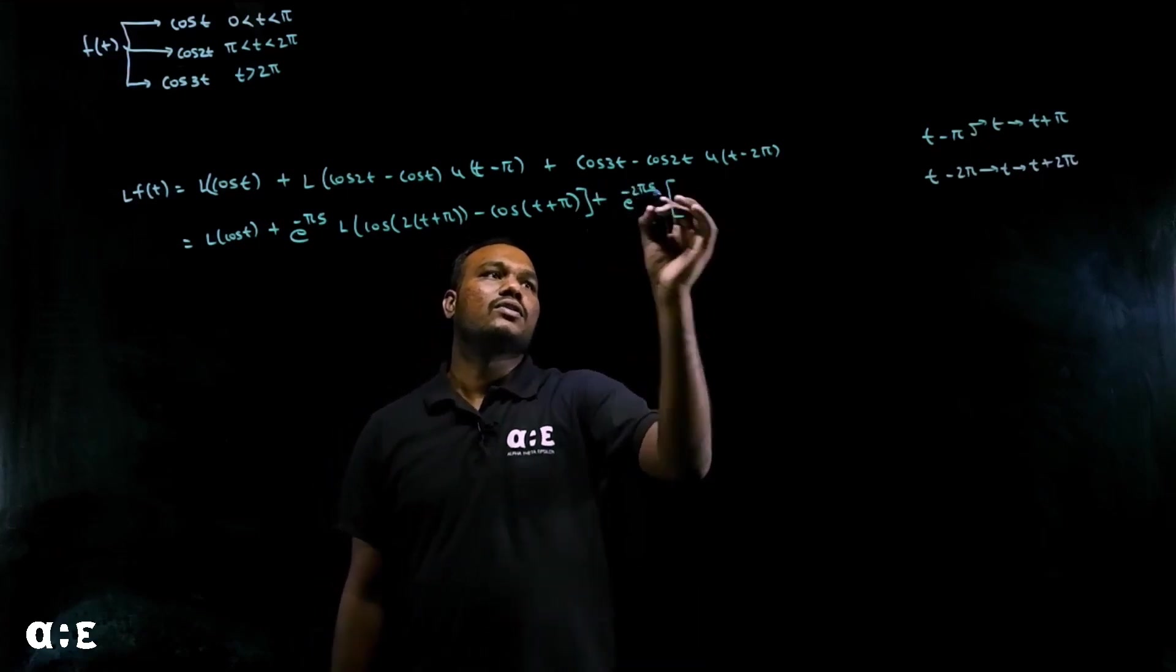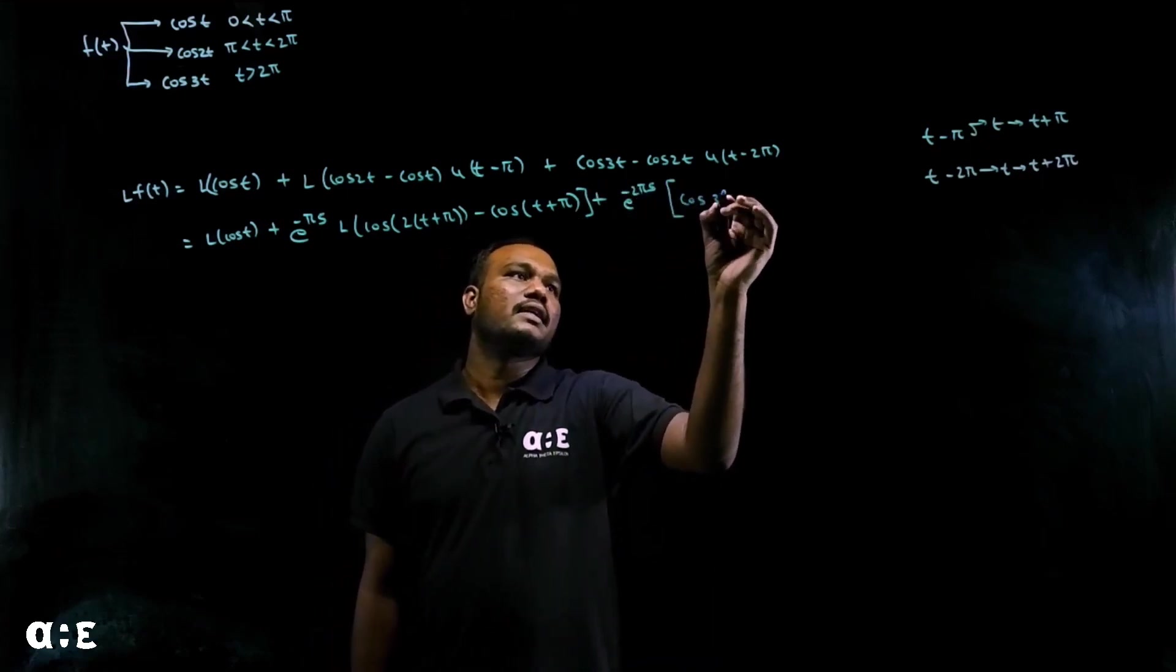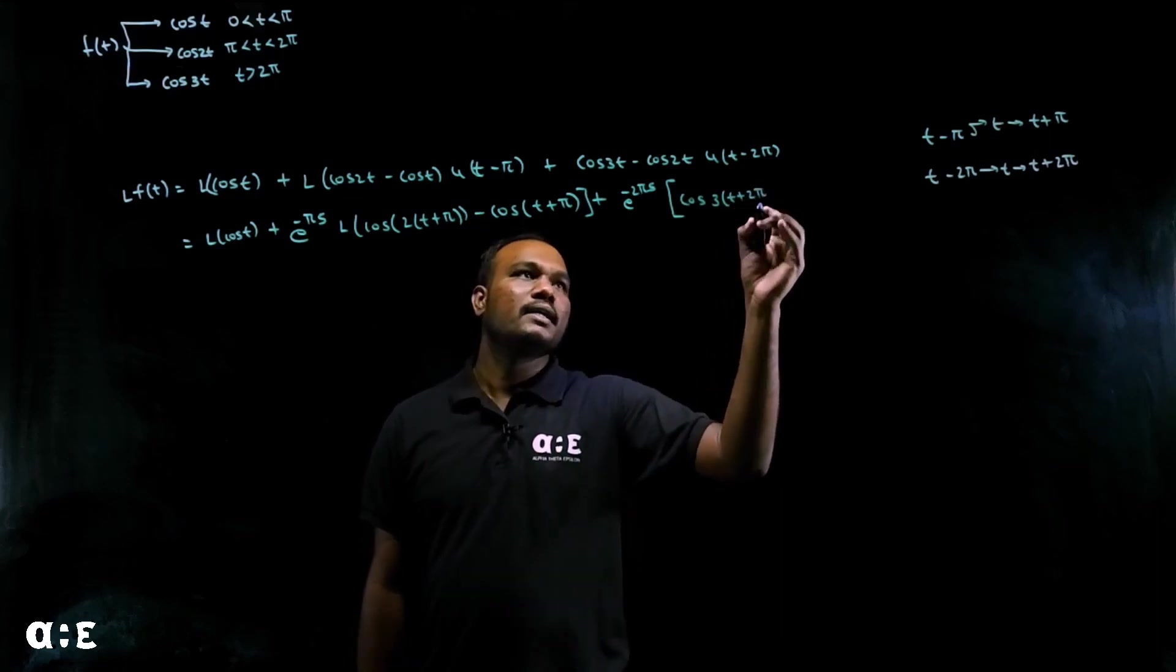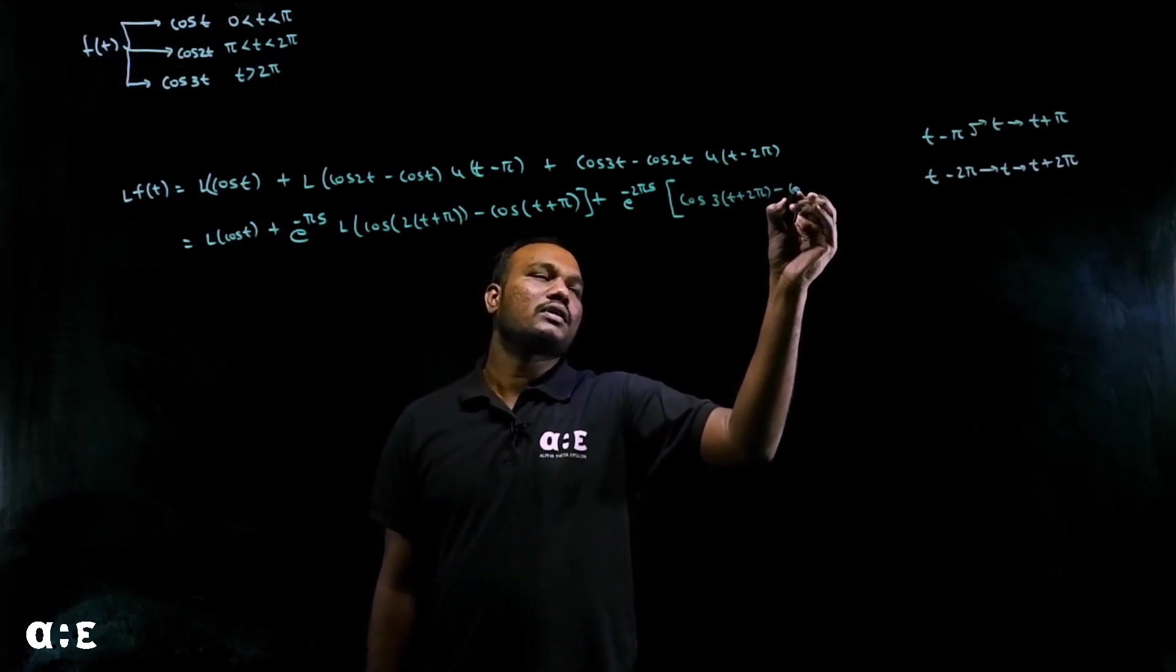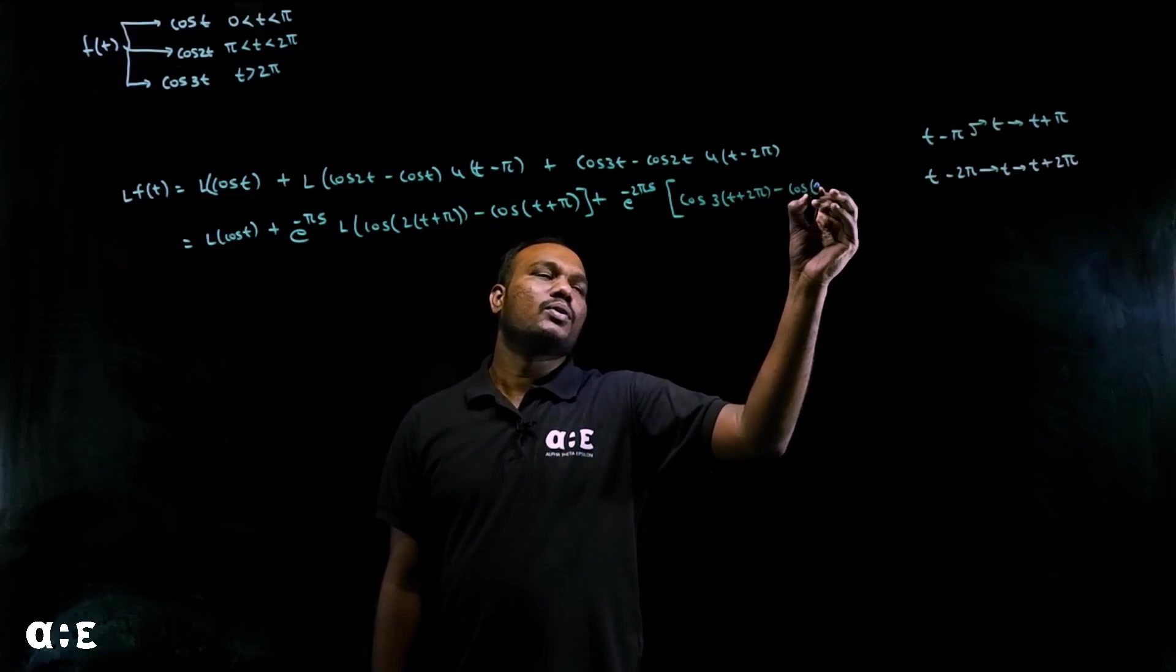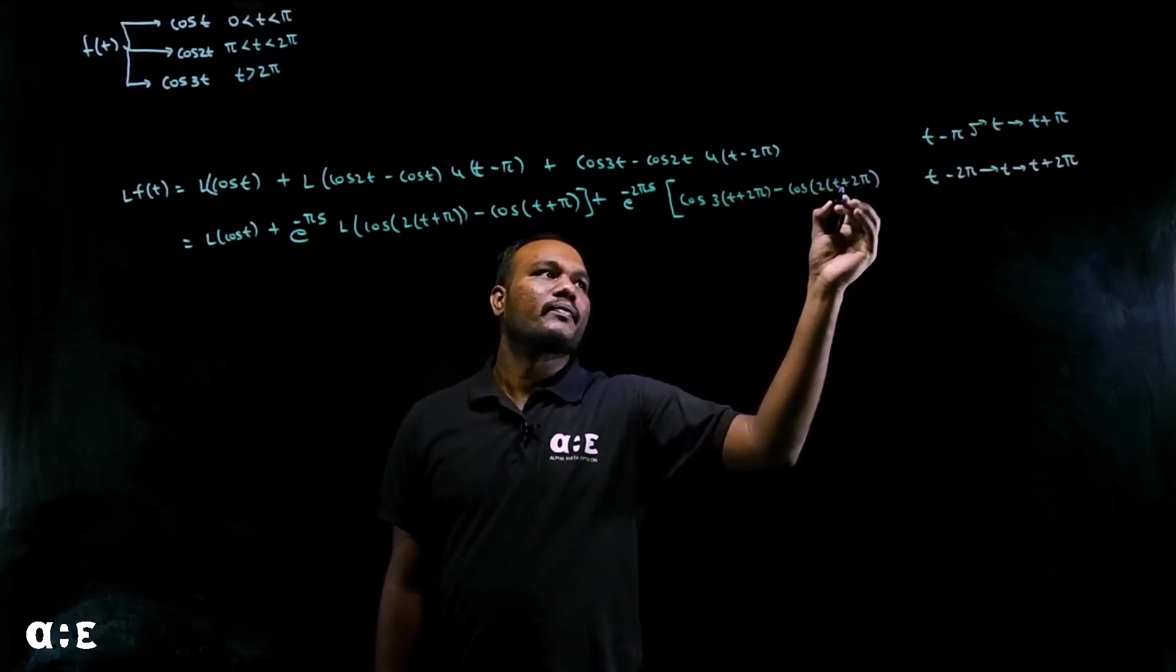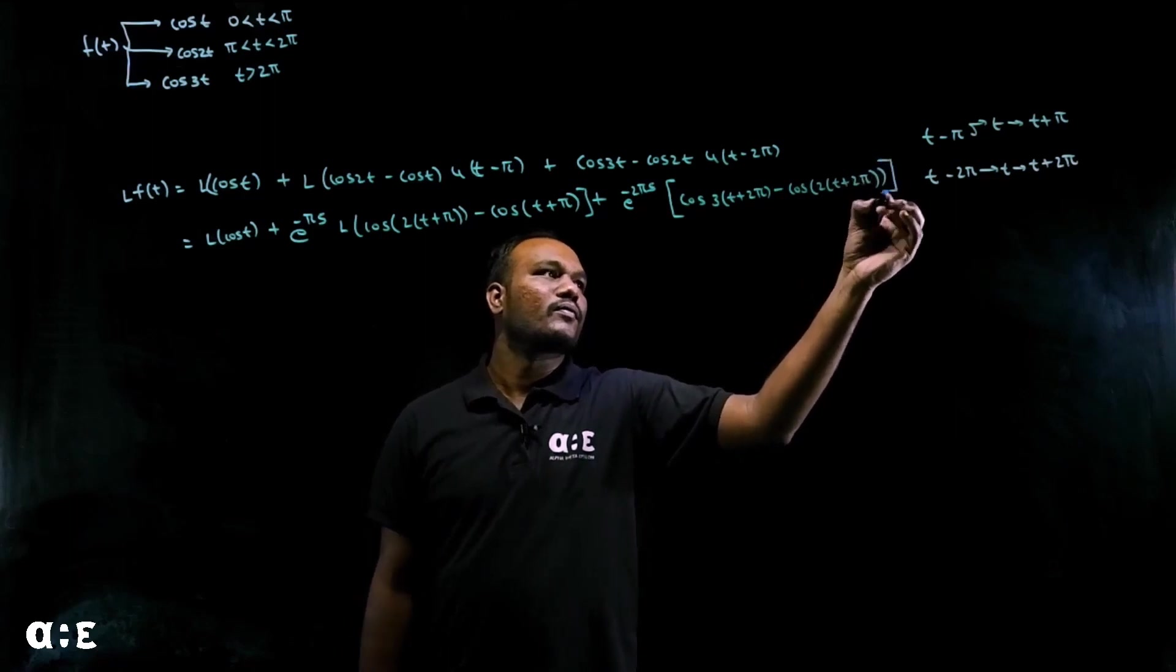So what do we get? Cos 3(T+2π) minus cos 2(T+2π).